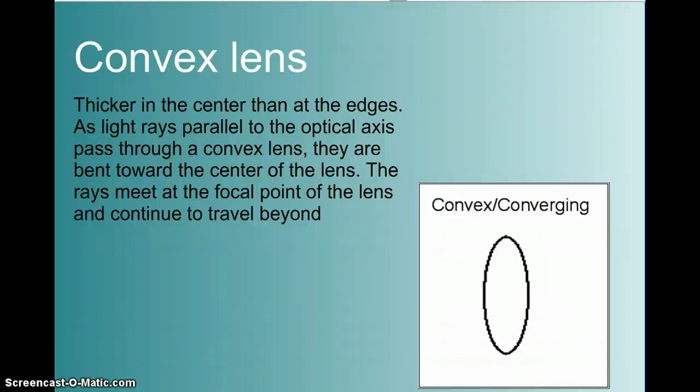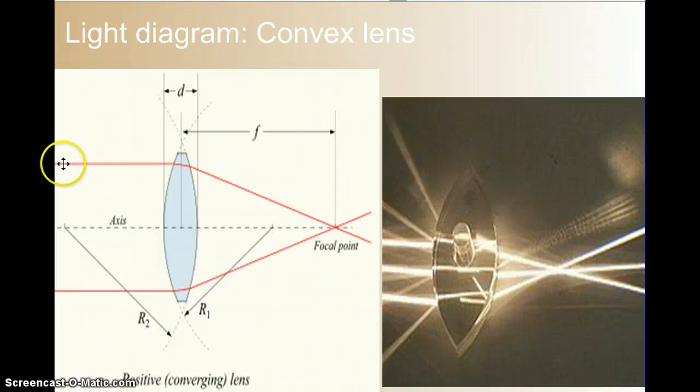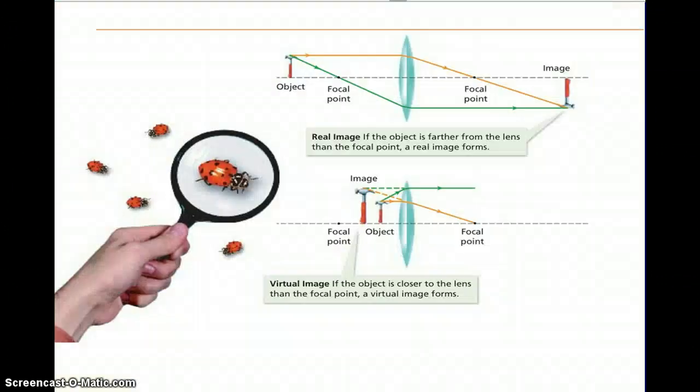A convex lens is thicker in the center than it is at the edges, and as light rays pass through it, they are bent towards the center of the lens, and the rays meet at a focal point. This is where the image can then flip upside down. So, great picture here of what is happening to the light. We can't always see the light rays, but they go through this glass, or this plastic lens, and they bend inwards, and they cross at a focal point. Actual photograph here of what that would look like. Light rays bending through that lens, and crossing at the focal point.